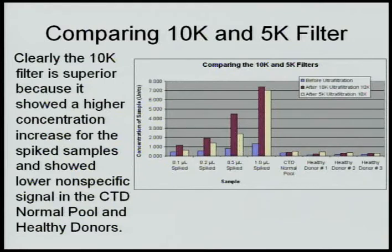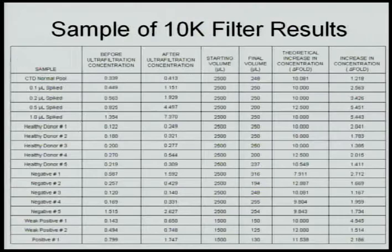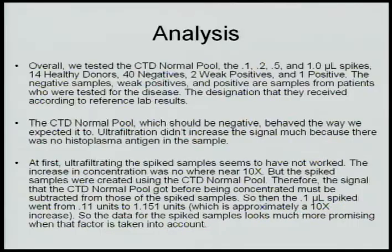This is some data comparing the 10K and the 5K, and we found that the 10K is clearly superior because it showed higher concentration increases in our spike samples and lower non-specific signals in our healthy donor. We used the 10K filter to test all the samples. Overall, we tested a CTD normal pool, different spikes, 14 healthy donors, 40 negatives, two weak positives, and a positive sample.